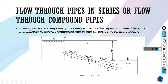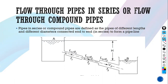Now we are going to see flow through pipes in series, also called flow through compound pipes. When we have multiple pipes — more than two pipes in series — we want to find the total head loss. Suppose we have reservoir A and reservoir B. What will be the total head loss once the water starts flowing from A to B through three pipes: pipe one, pipe two, and pipe three?